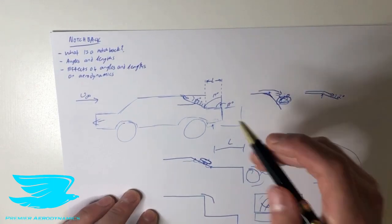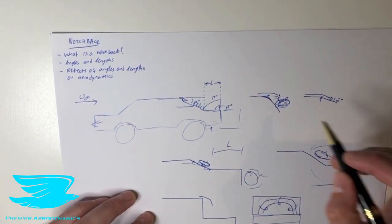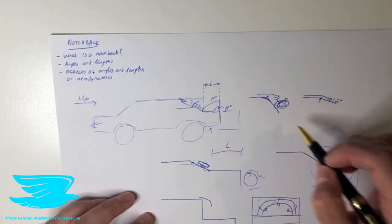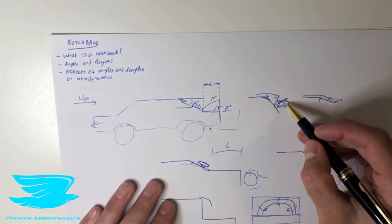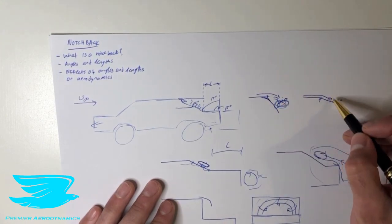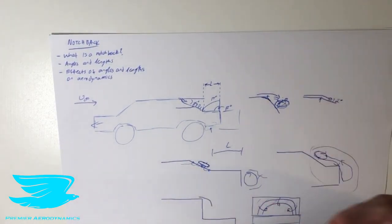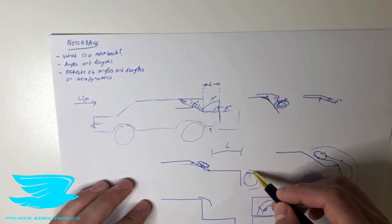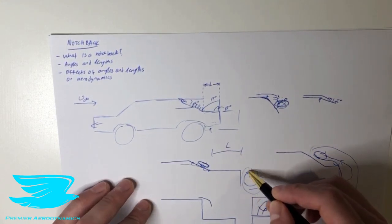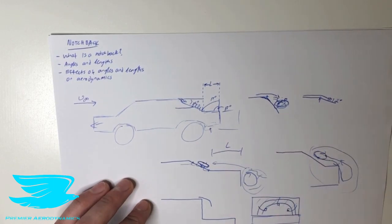The effects of these angles, for example, the alpha angle, which is the angle between the roof and the backlight or the back window, whichever one you want to call it, that can affect whether the flow stays attached like this or detached like that. So the amount of wake you'll get.